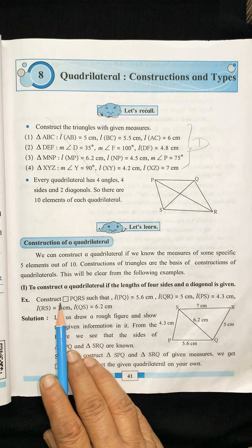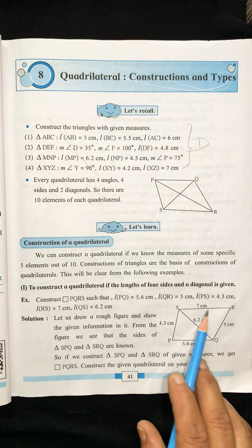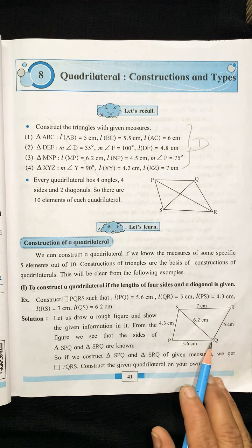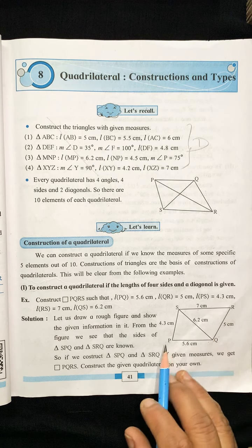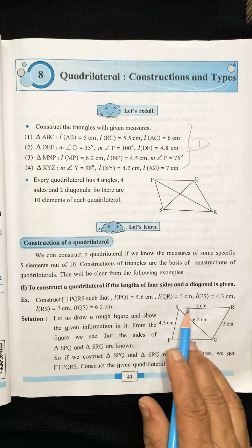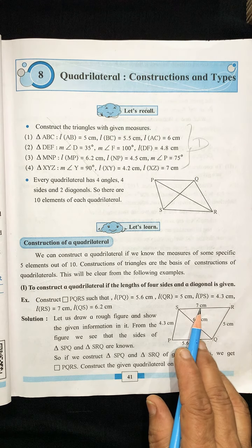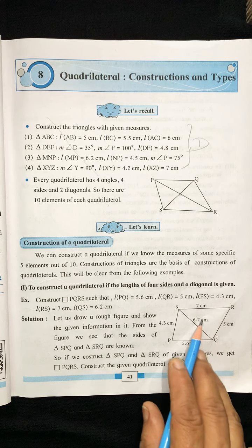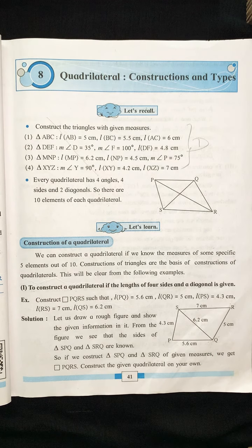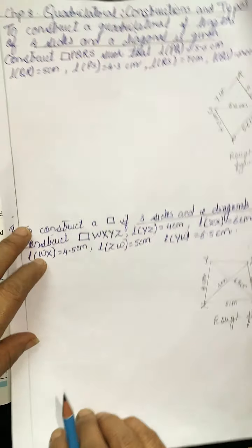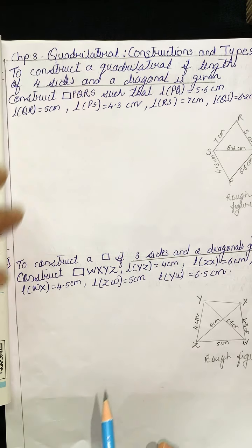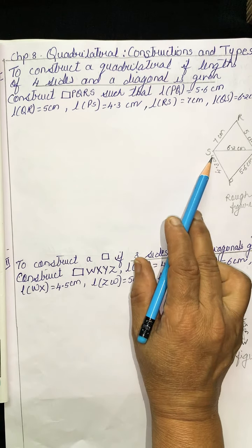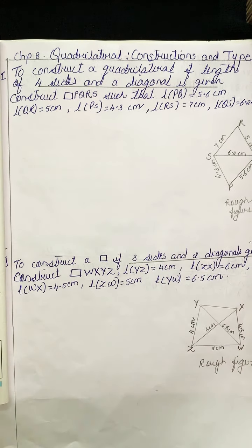Let's learn how to draw the first type of construction: to construct a quadrilateral if the lengths of the four sides and a diagonal are given. Here, let us construct quadrilateral PQRS such that PQ = 5.6, QR = 5 cm, PS = 4.3, RS = 7 cm, and diagonal QS = 6.2 cm. You have to always draw a rough figure first. I have already drawn a rough figure, and based on that information I will draw the fair figure.